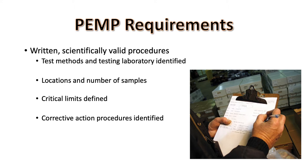The specific sample locations within your facility should be determined ahead of time, and the number of locations, rotations through these locations, and the frequency of sampling should be specified. Critical limits should be defined and corrective actions identified in advance. The goal of a pathogen environmental monitoring program is to identify and reduce or eliminate pathogen niches in your facility. If your program is working, you should expect to occasionally find pathogens, and it is important to be prepared when you do.